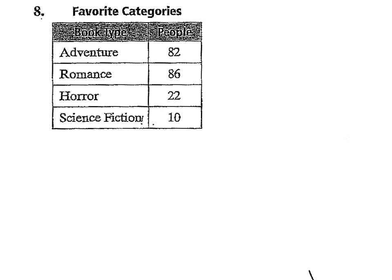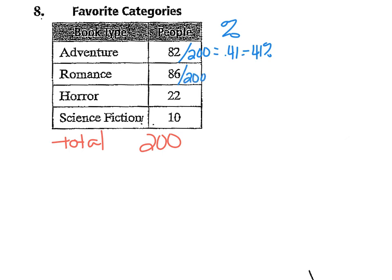The first step is to find the percent for each category, starting by finding the total. We're going to add up 82 plus 86 plus 22 plus 10, and my total is 200. To find the percent for each category, I divide each number by 200. So 82 divided by 200 gives me 0.41, which is 41%. Next, 86 divided by 200 is 0.43 or 43%. Then 22 divided by 200 is 0.11 or 11%. And 10 divided by 200 is 0.05 or 5%.